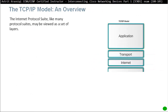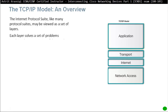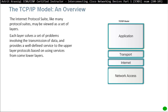The first model we're going to talk about is the TCP/IP model. The TCP/IP model is made up of four layers: application layer, transport layer, internet layer, and network access. The internet protocol suite may be viewed as a set of layers. Each layer solves a set of problems involving the transmission of data and provides well-defined services to the upper layers, with protocols using services from lower-layer protocols.